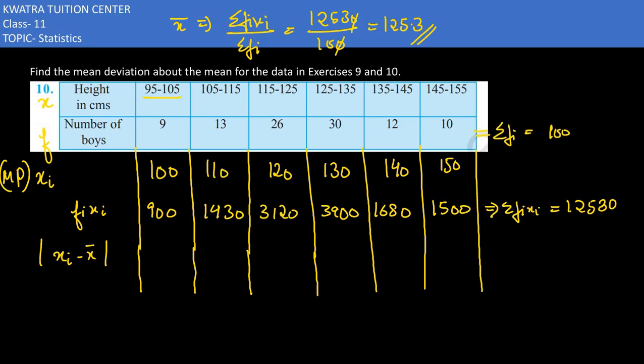Next, for the mean deviation, I need summation f times mod of xi minus x bar. So first, xi minus x bar. 100 minus x bar gives 25.3, take the mod. Next is 15.3 positive. Then it would give you 5.3, then 4.7, then 14.7, then 24.7.